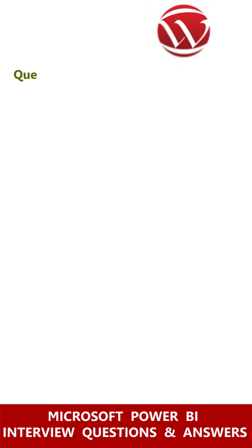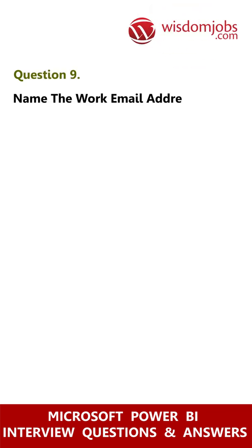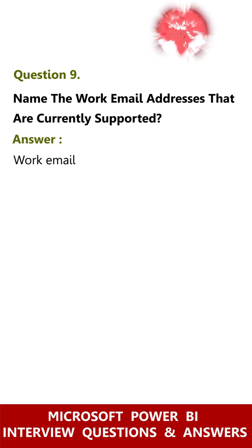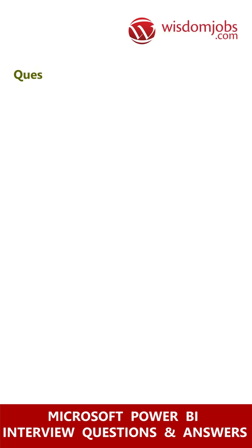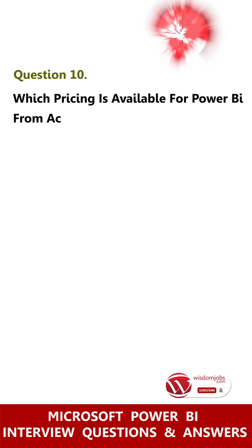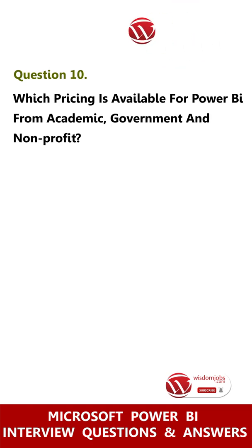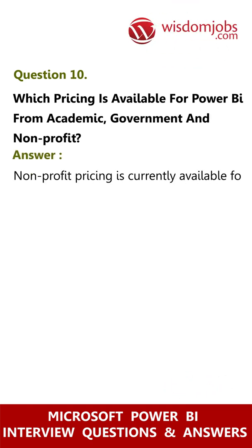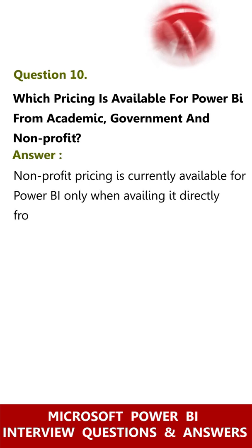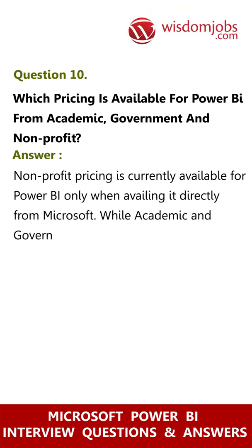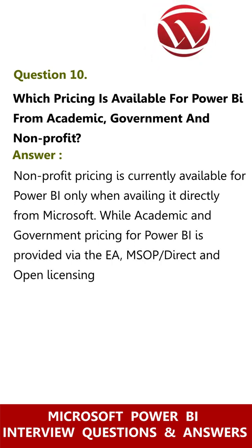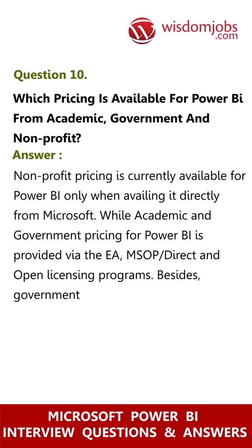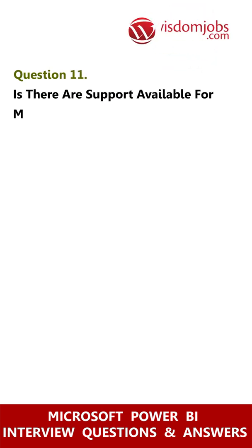Question 9: Name the work email addresses that are currently supported. Answer: Work email addresses ending with .org and .edu are currently supported. Question 10: Which pricing is available for Power BI from academic, government, and non-profit sectors? Answer: Non-profit pricing is currently available for Power BI only when availing it directly from Microsoft, while academic and government pricing for Power BI is provided via the EA, MSOP, direct, and open licensing programs. Government pricing can also be availed in syndication.